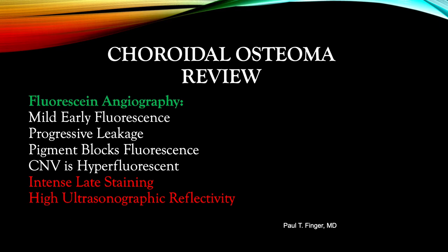In review, fluorescein angiography of choroidal osteoma reveals poor initial fluorescein penetration associated with only mild early fluorescence. As the dye accumulates in the tumor and becomes trapped, there is progressive increased hyperfluorescence, even in the latest phases of the study. Overlying retinal pigment epithelial hypertrophy pigment will block fluorescence. Areas that contain subretinal or choroidal neovascularization will demonstrate intense hyperfluorescence. Very slow washout of the dye from the tumor over time leads to the pathognomonic finding of intense late staining. Lastly, don't forget to perform a low-decibel ultrasound imaging study to see persistent high reflectivity.